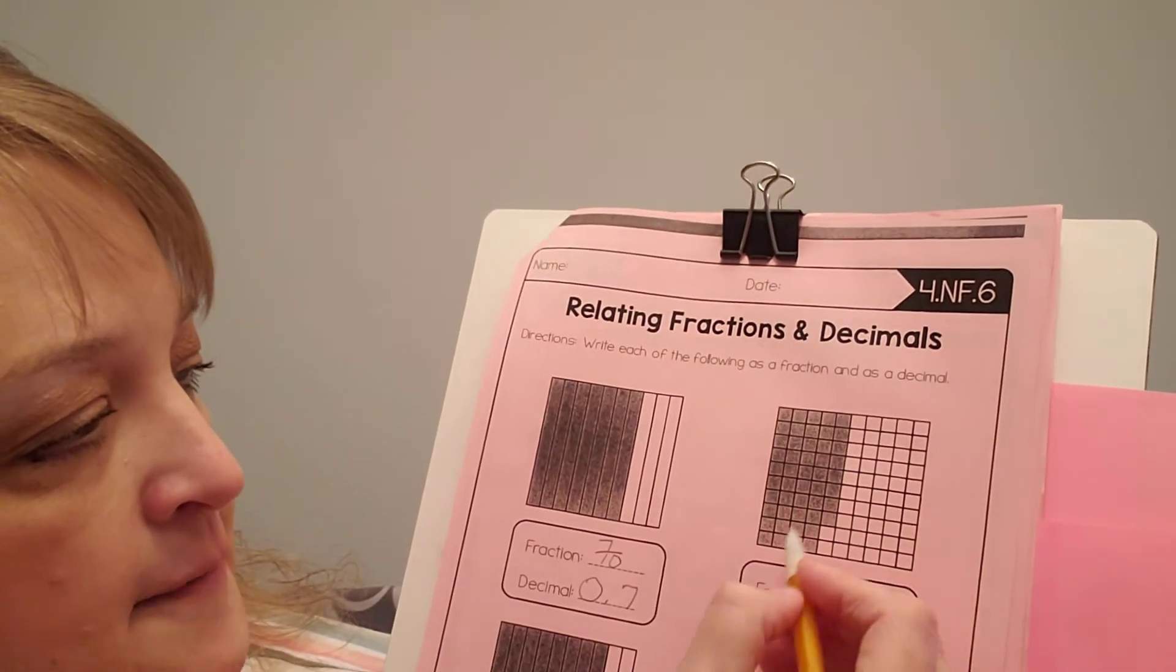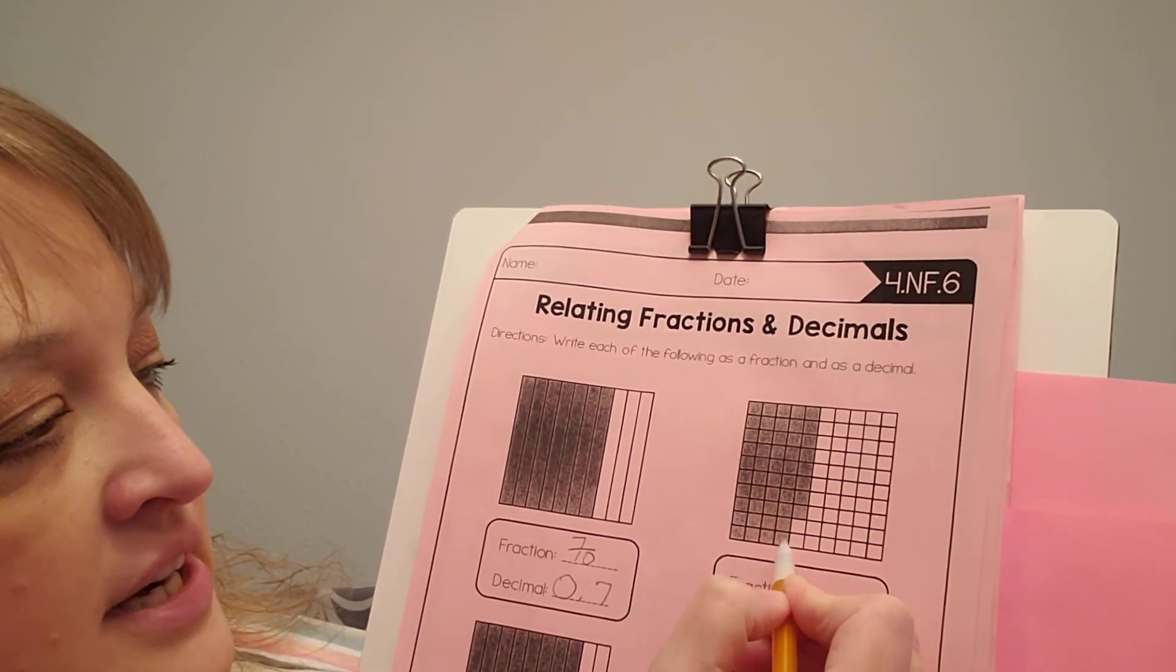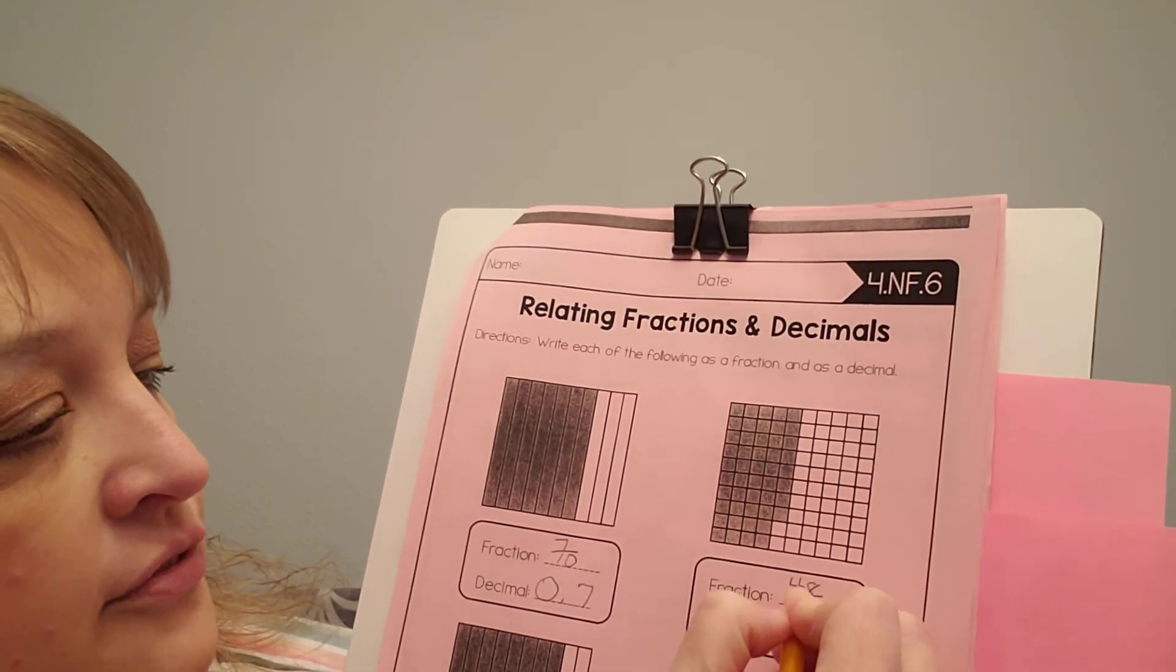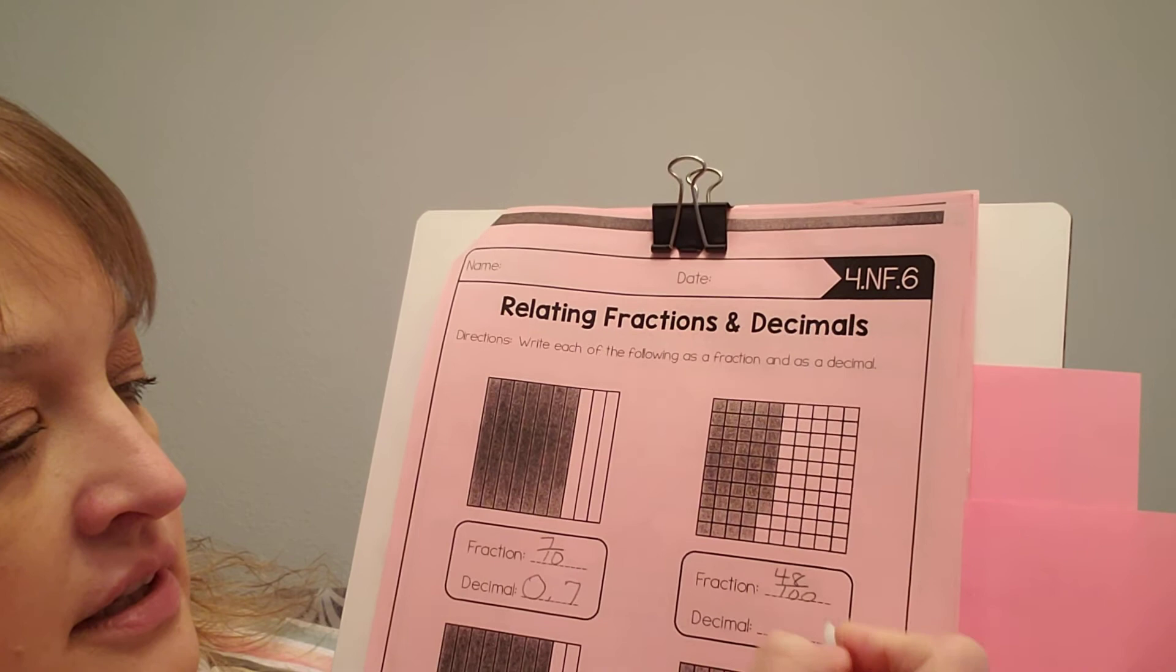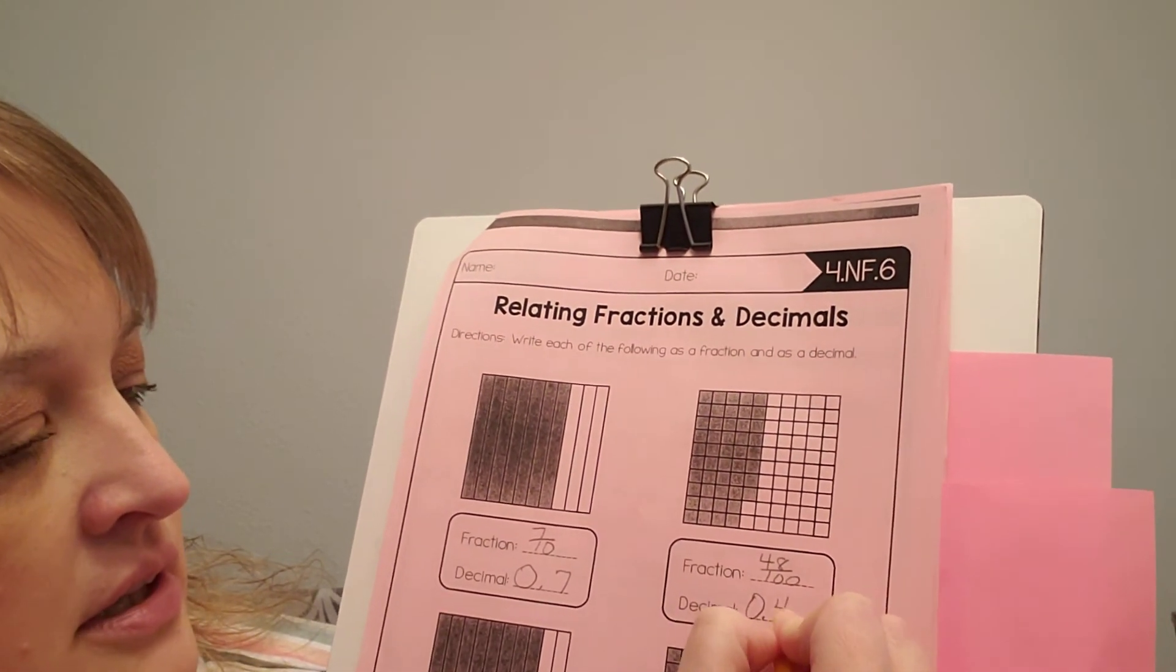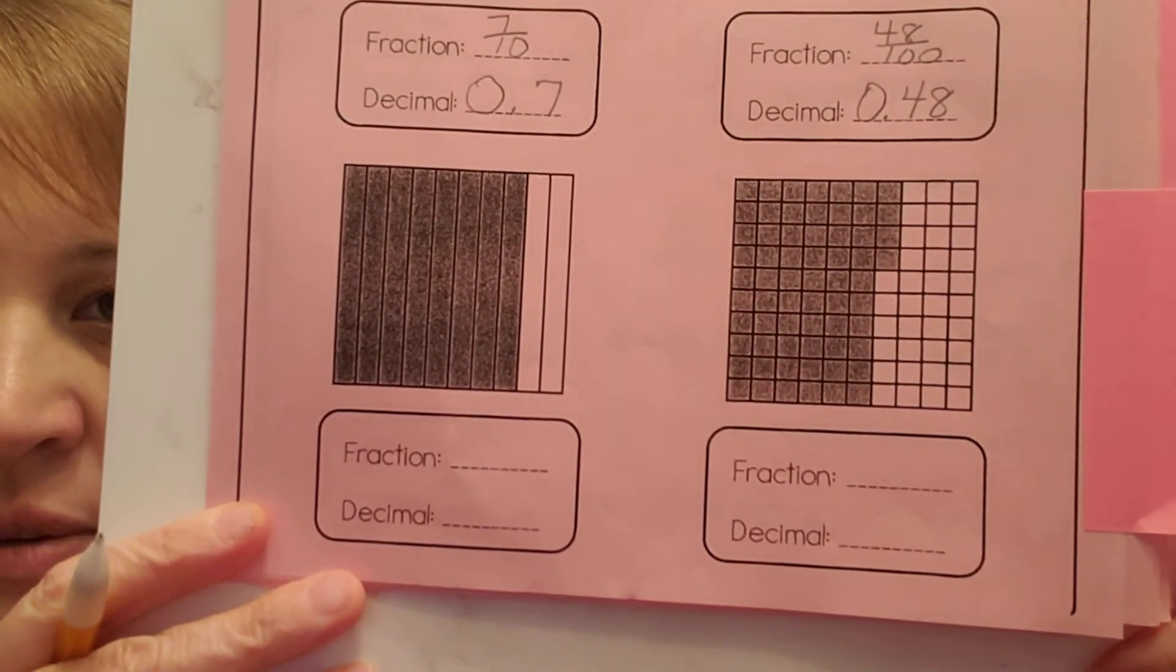All right. Let's look at this one. We have 10, 20, 30, 48 over 100. And my decimal would be 0.48. All right. You do these last two problems.